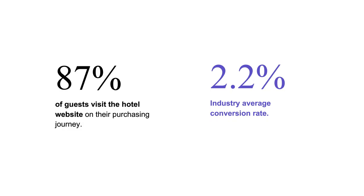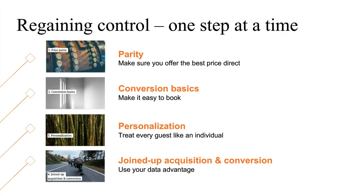The good news for hotels is that a vast majority of guests will visit your website — even OTA bookers. About two thirds of Expedia visitors will have gone to the hotel website before booking, because the hotel website really is seen as the ultimate source of truth. The bad news is that most hotel websites don't do a great job of converting people, and off they trot back to the OTAs. I want to talk about four areas that are really key in helping hotels drive more bookings direct: parity, some conversion basics, personalization, and joined-up acquisition and conversion.